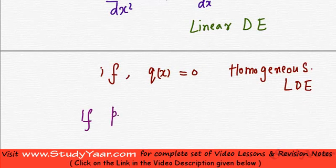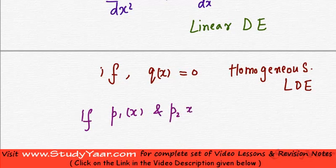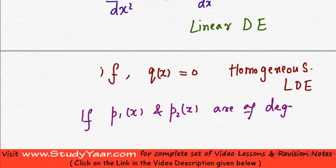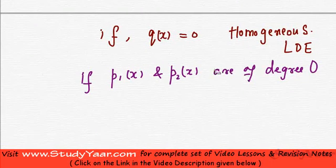If p1(x) and p2(x) are of degree 0, in other words, if they do not contain any x terms, then we have constant coefficients.